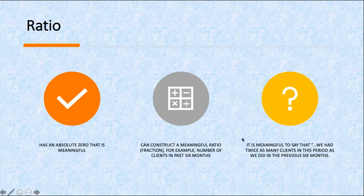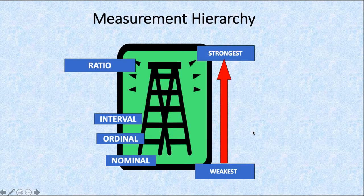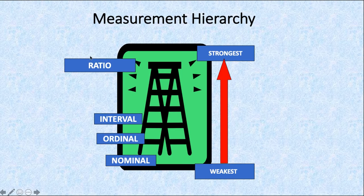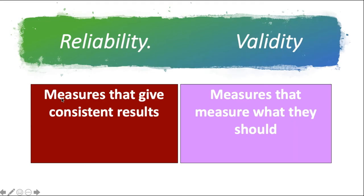This is the measurement hierarchy: the weakest is nominal, then ordinal, then interval, and the strongest is ratio.